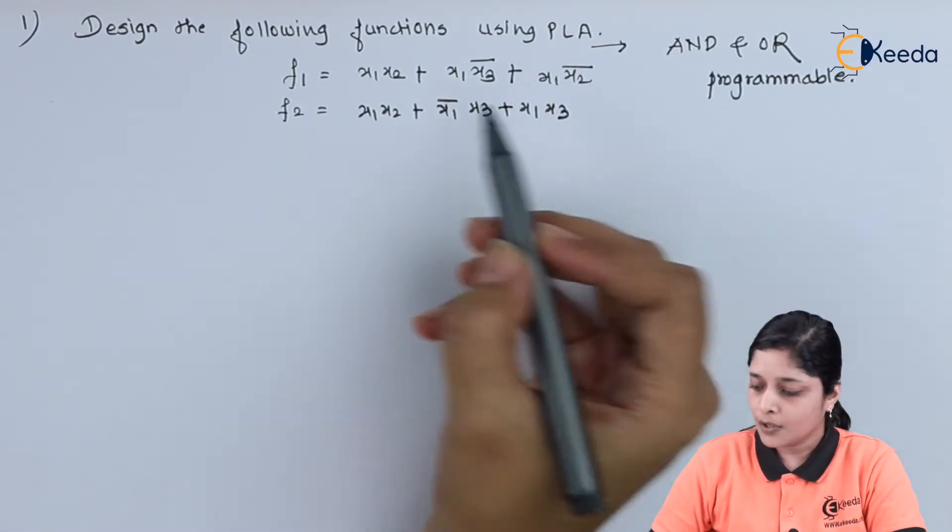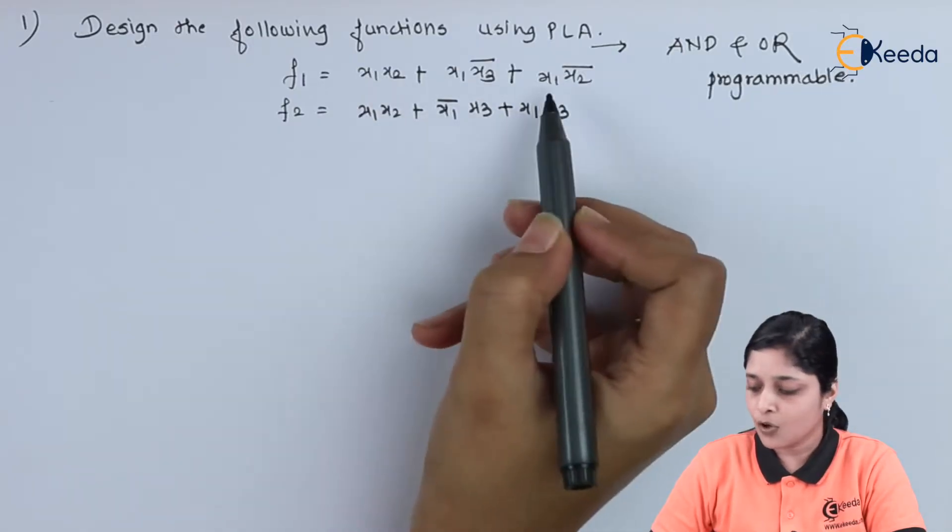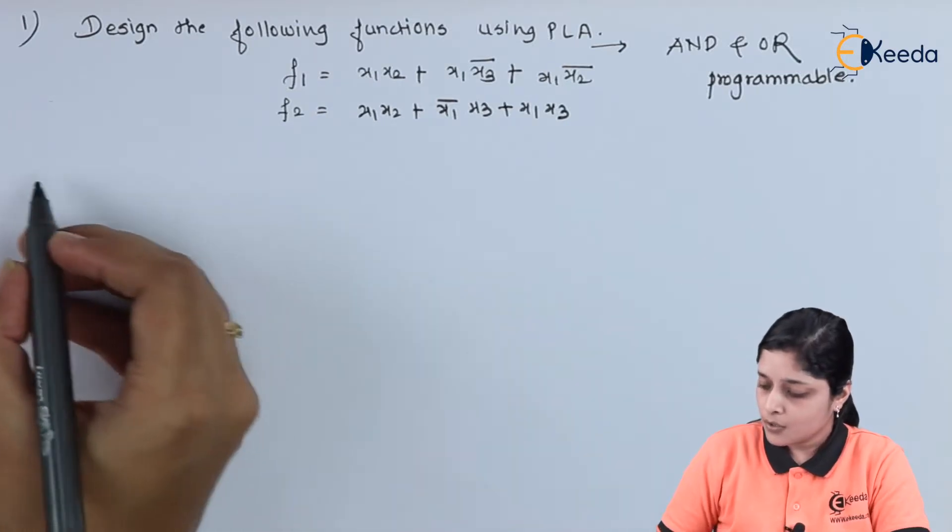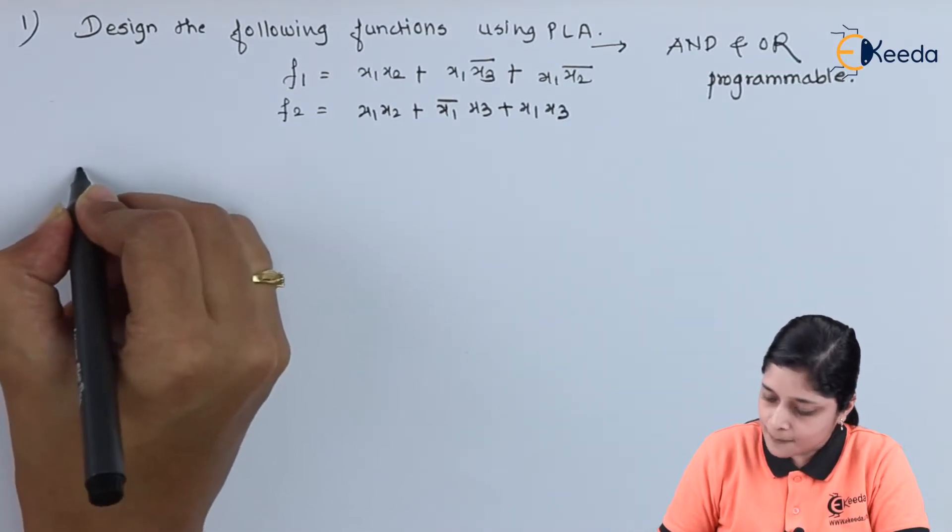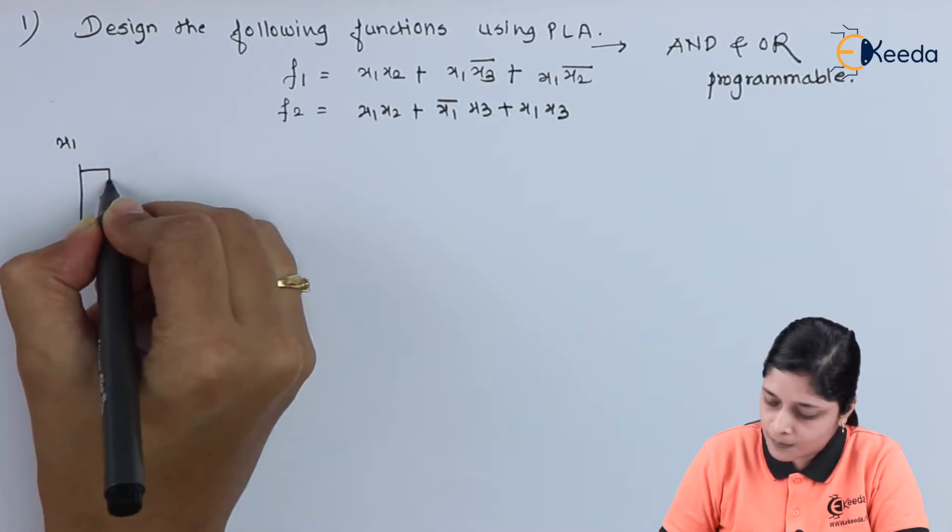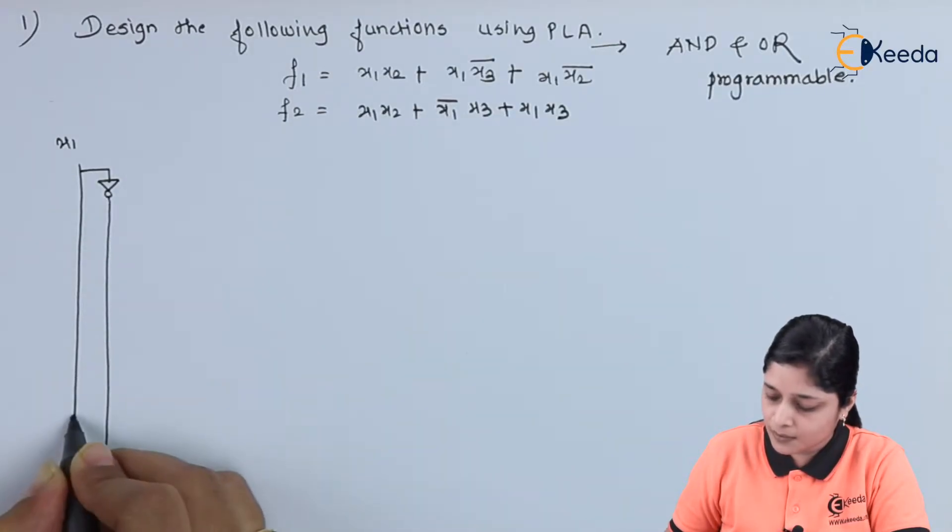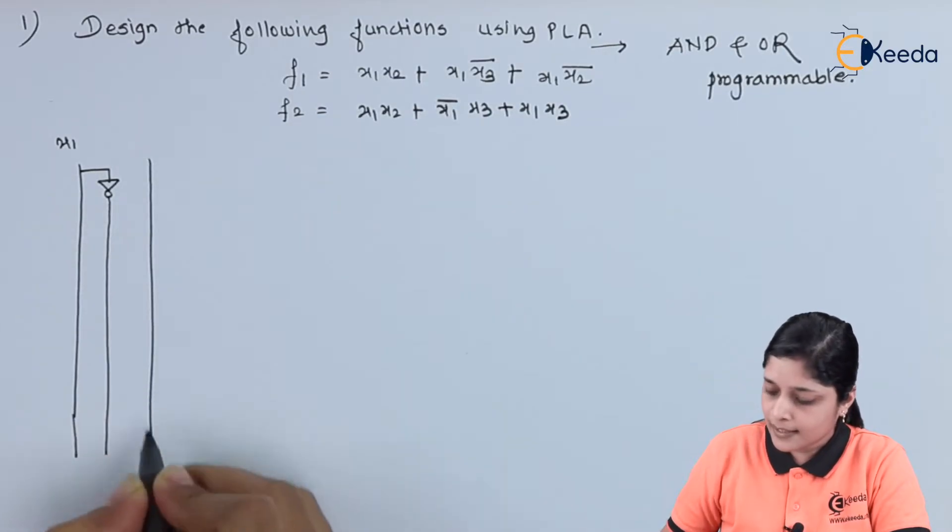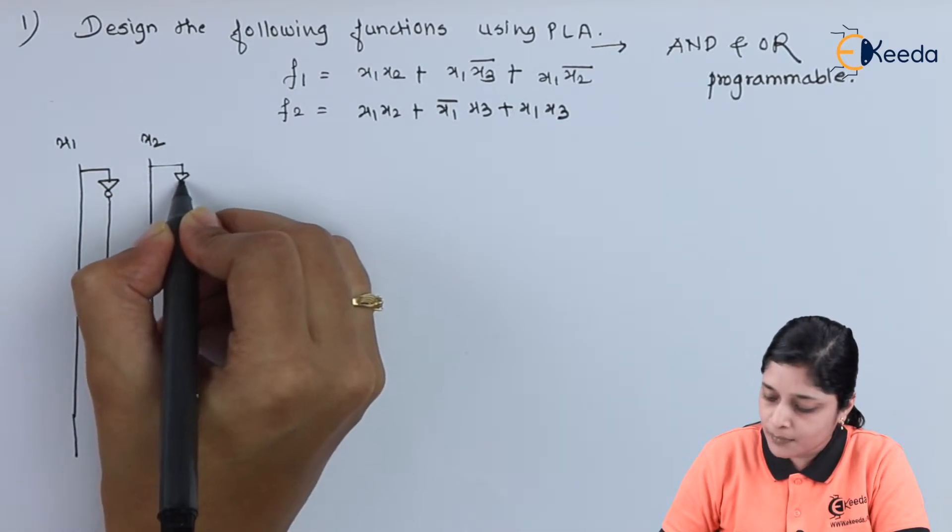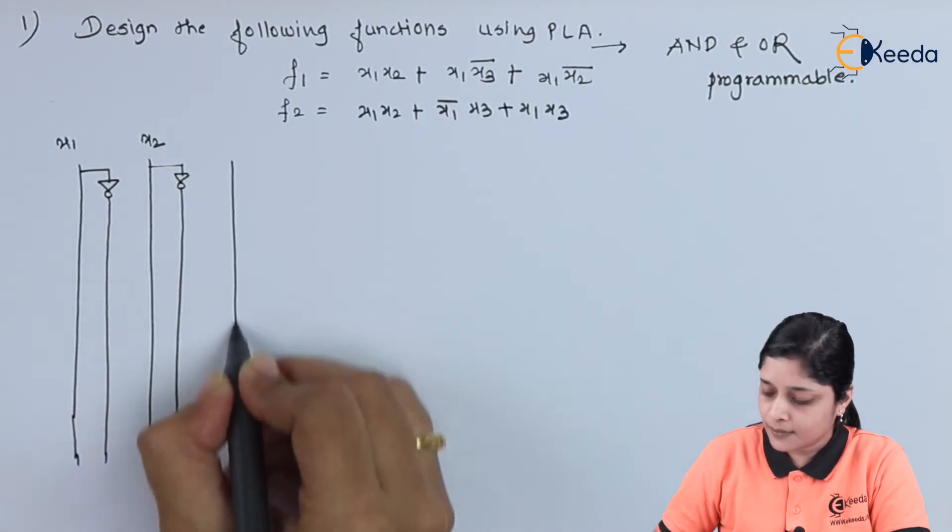Your input variables are x1, x2, and x3, and complements are also present in the following functions. So we will draw like this: this is your first input x1, the complement of x1 will give you this way. Next input is x2, the complement of x2 will give you in this way.